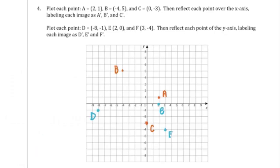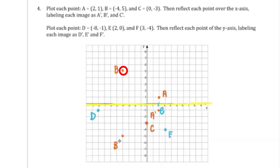I've plotted points A, B, C, D, E, and F. Reflecting points A, B, and C over the x-axis — the horizontal line. A is (2, 1); reflected over the x-axis it will be at (2, −1) — label that A prime. B is at (−4, 5); reflected over the x-axis it is now at (−4, −5) — B prime. C is originally (0, −3); reflecting over the x-axis it's now (0, 3) — C prime.